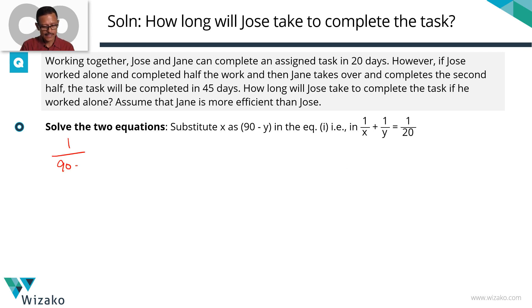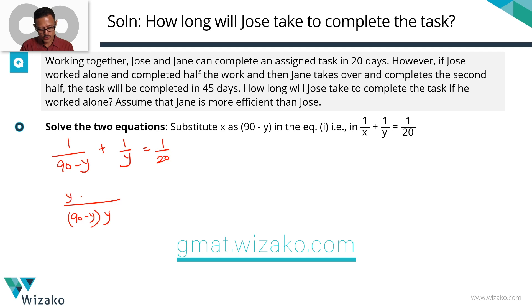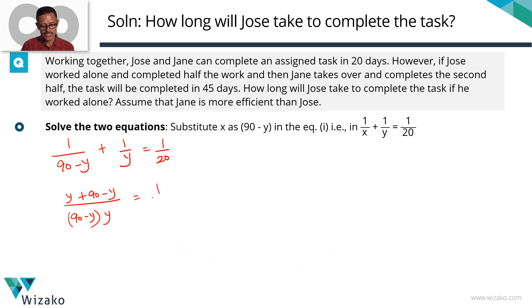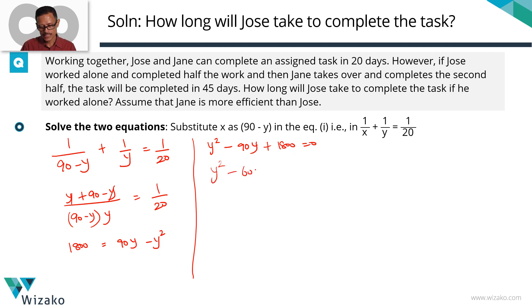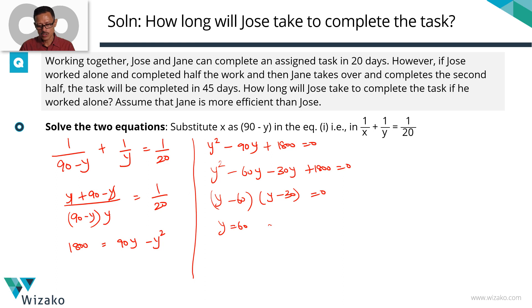Substituting gives: 1/(90 − Y) + 1/Y = 1/20. Taking (90 − Y)·Y as the common denominator, the left-hand side numerator becomes Y + (90 − Y) = 90. Cross-multiplying: 90 × 20 = 1800 = 90Y − Y². Rearranging: Y² − 90Y + 1800 = 0. The product is 1800 and the sum is 90, so factorize as (Y − 60)(Y − 30) = 0. Therefore Y = 60 or Y = 30.